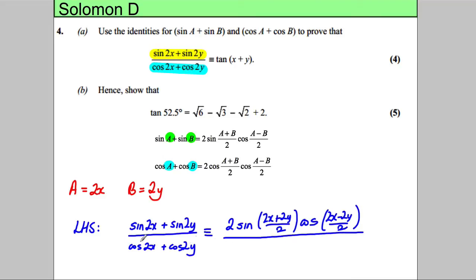And we would divide it by this here. And so it would be 2 cos of 2X plus 2Y over 2, and cos 2X subtract 2Y over 2.